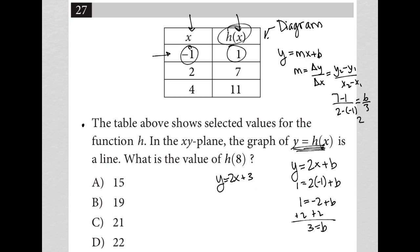So when the question asks what is the value of h(8), basically it's saying what does y equal when x equals 8. So I just go to my equation and say, what does y equal when x equals 8? Let's plug 8 in for x. Plus 3. So it becomes y equals 16 plus 3, which is 19. And therefore, the correct answer here is choice B.